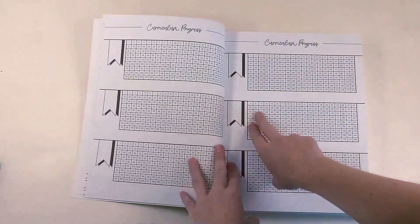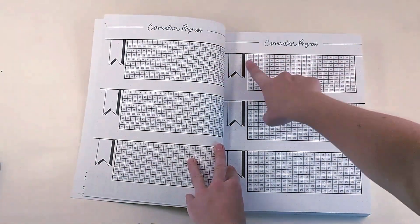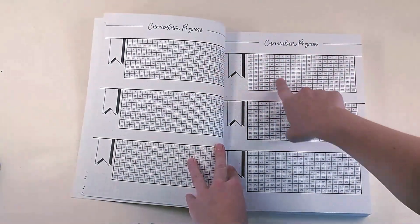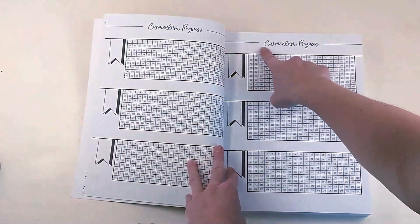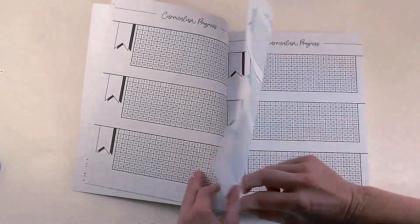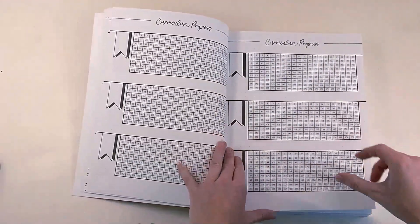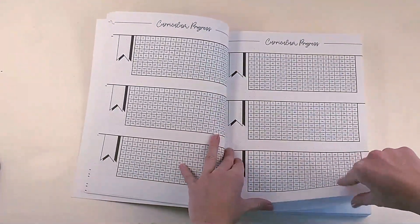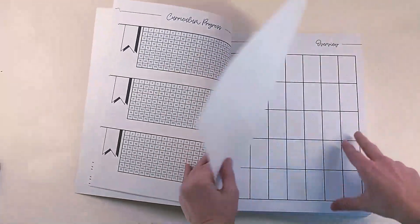So we have curriculum progress. So as your students complete the days to their curriculum, you can kind of track where they are in that. So a space to write maybe what the curriculum is up here, and then track that down here. You have quite a bit of space for that, probably corresponding to the other curriculum lists over here in the beginning. So I think there's about 12 of them, if I'm not mistaken.